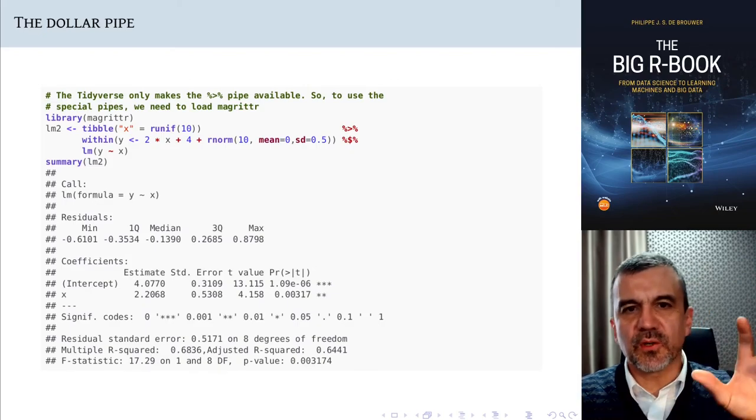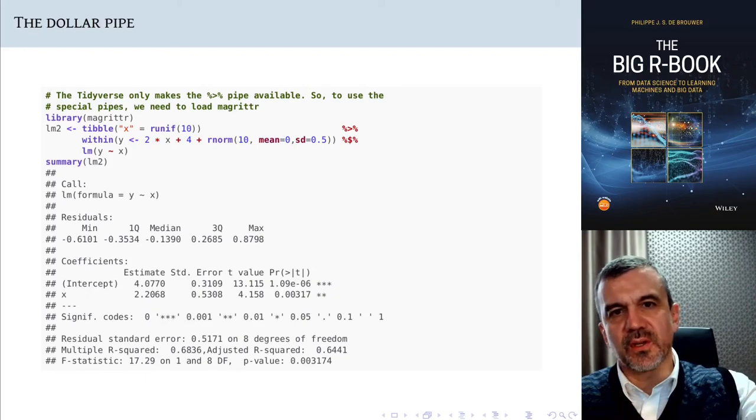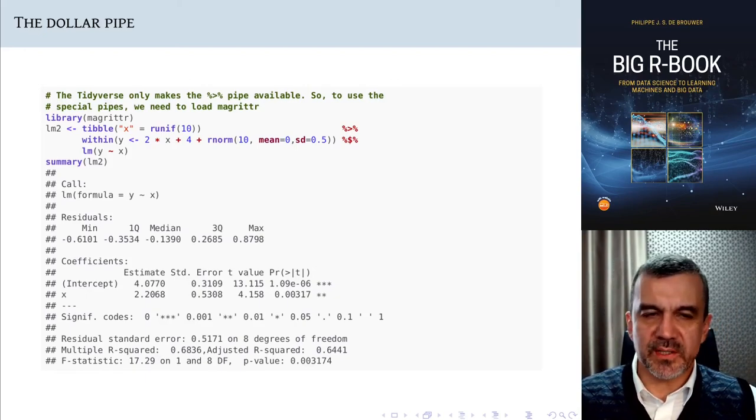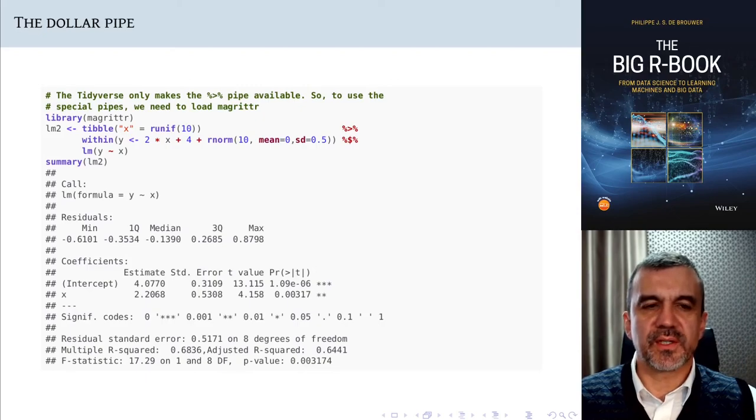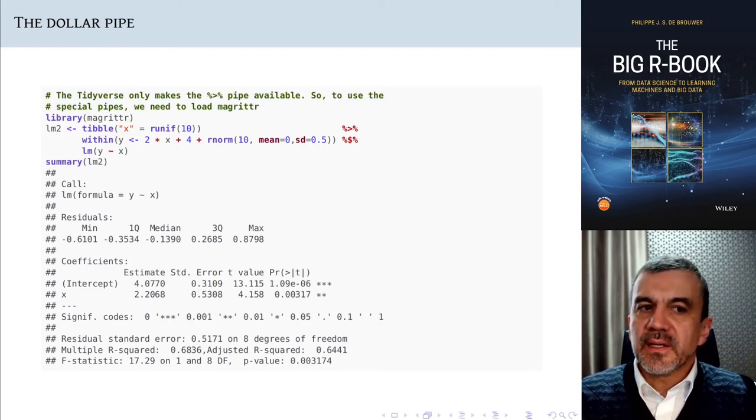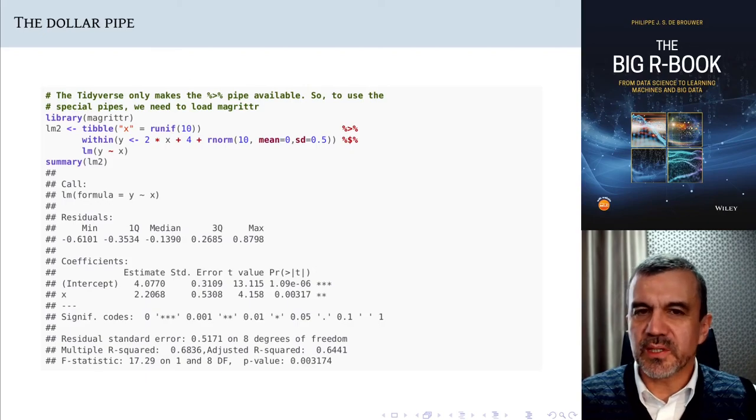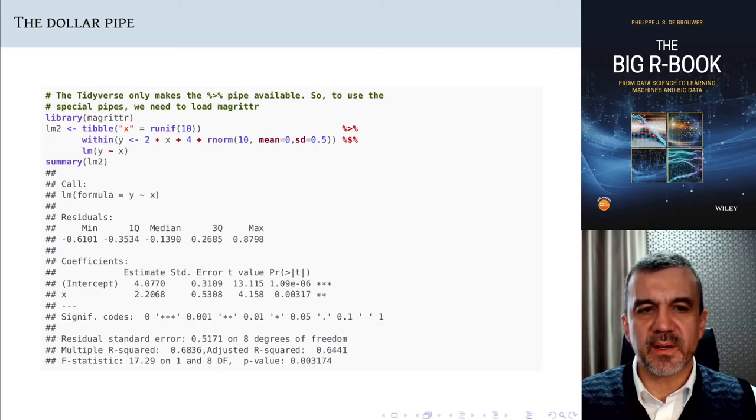So that is the standard piping command that you have. That passes on the data, the tibble from the first line to the second line and puts it there as the first argument of the function that sits on that second line. And that is by large and far what you will find most. That is really very useful because in data manipulations, data wrangling, steps before you're making models, that is absolutely what you need.